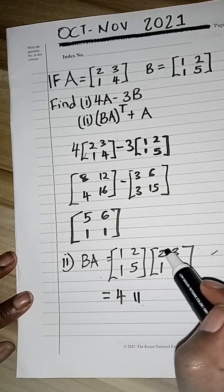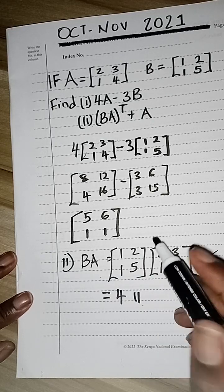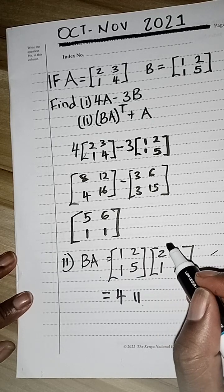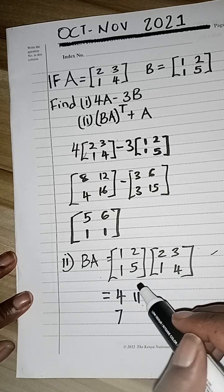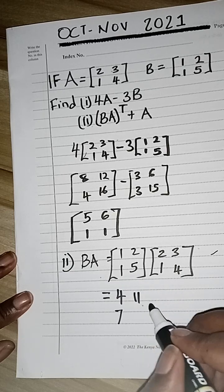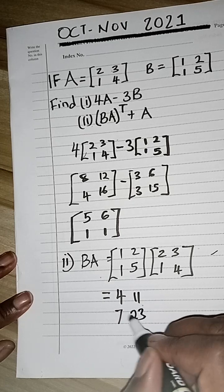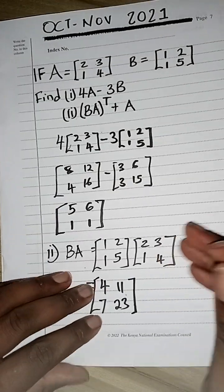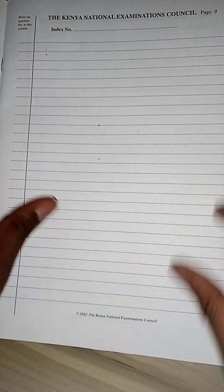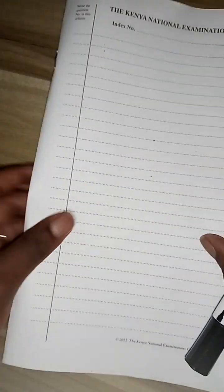Continuing with BA: 1×2 plus 5×1 gives 7, and 1×3 plus 5×4 is 3 plus 20, giving 23. So the matrix BA is [4, 11; 7, 23].